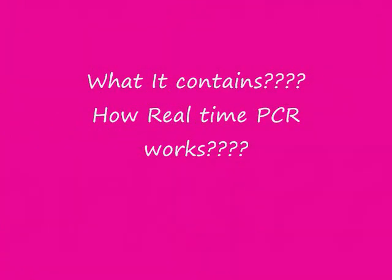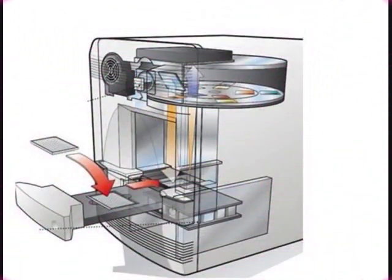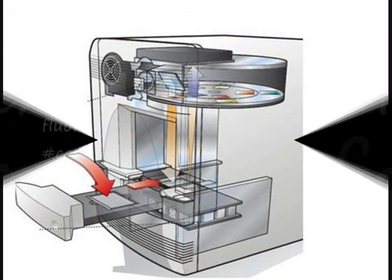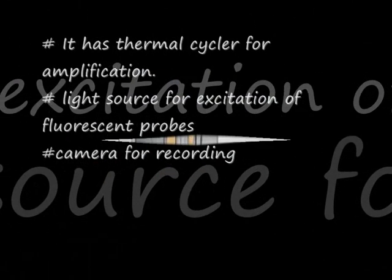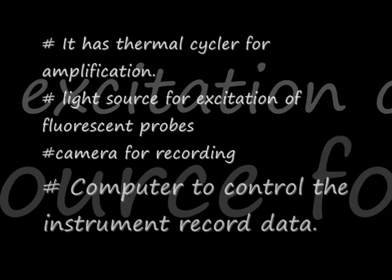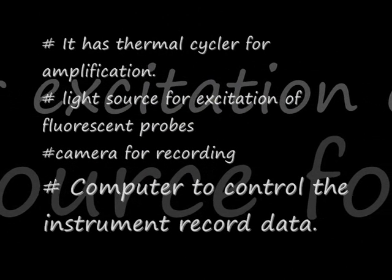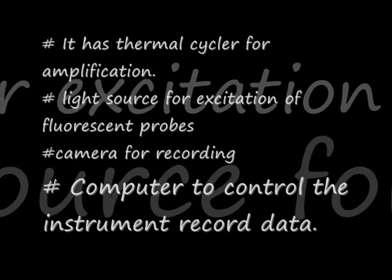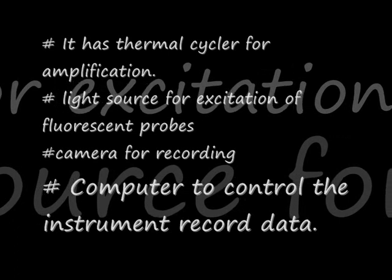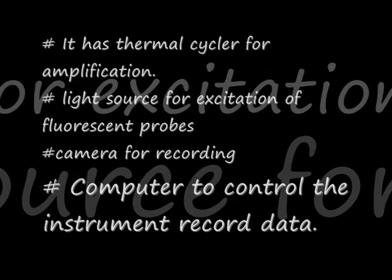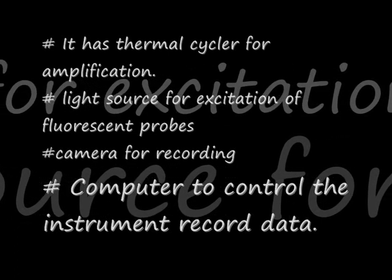Let's see what the real-time PCR contains and how it works. The real-time PCR has a thermal cycler for amplification, a light source for excitation of the fluorescent probe, a camera for recording, and a computer to control the instrument and record data.